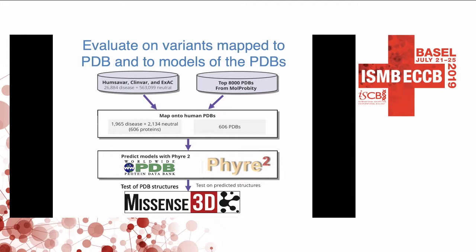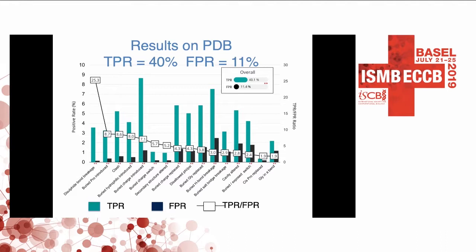We don't use the template of the real structure when making the model — that wouldn't be fair. Showing the results using experimental structures from the Protein Data Bank: we plot the true positive rate and the false positive rate. Overall, we have a true positive rate of 40%, meaning that for 40% of the disease-associated variants, one of these 16 structural properties is altered. For the false positive rate, only 11% of neutral variants show one of these structural properties being altered. The disulfide bond breakage was the most highly discriminating feature.